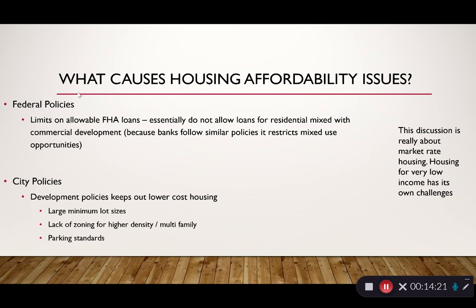Federal policies also influence housing affordability. The FHA — Federal Housing Administration — provides security for mortgages and is a major player in the mortgage market. Their policies on allowing mortgages in different areas influence what banks allow, and the FHA doesn't really allow loans in mixed-use residential areas. City policies also have an influence: large minimum lot sizes, lack of zoning for higher-density multi-family homes, and parking standards all increase the cost of housing and push it toward the higher end of the market.